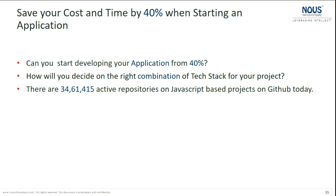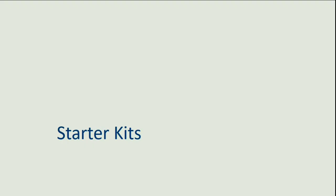How will you decide on the right combination of tech stack for your project? There are 3.5 million active repositories on JavaScript-based projects on GitHub today — among them Angular, React, and Vue.js. How will you make the right decision about technologies with 3.5 million active repositories on JavaScript?